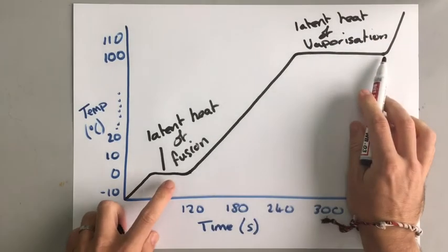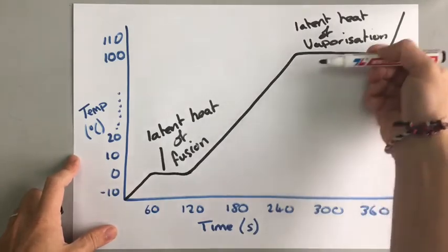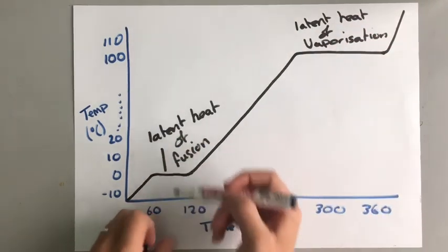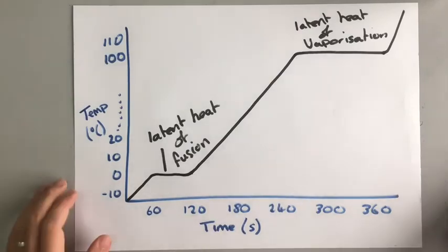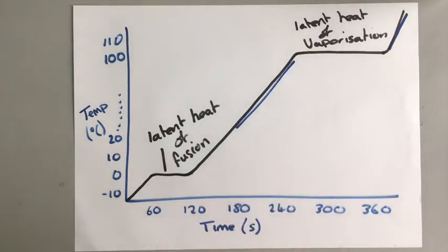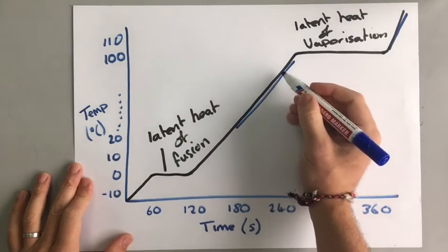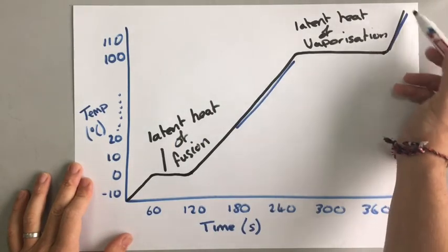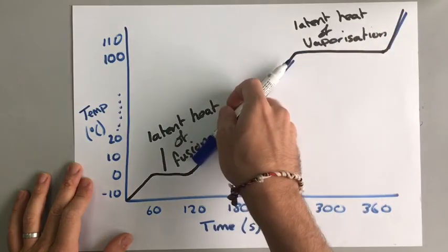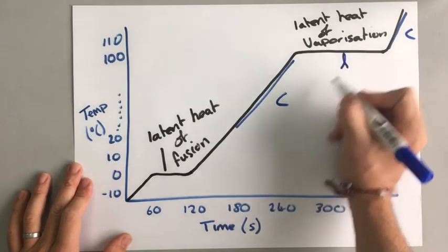You can see that the plateau is longer for the latent heat of vaporization — the time is greater, which means the energy required is more. If we're adding energy at a constant rate, it takes longer to vaporize all of the liquid, so the latent heat of vaporization is greater than the latent heat of fusion. You can also see that the gradient above 100°C is steeper than below 100°C, which means the specific heat capacity of steam is less than that of water — it takes less energy to increase the temperature of steam than of water. The gradient relates to specific heat capacity, and the length of the plateaus relates to latent heat.